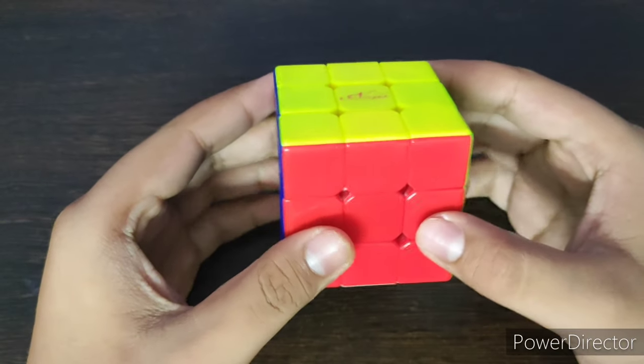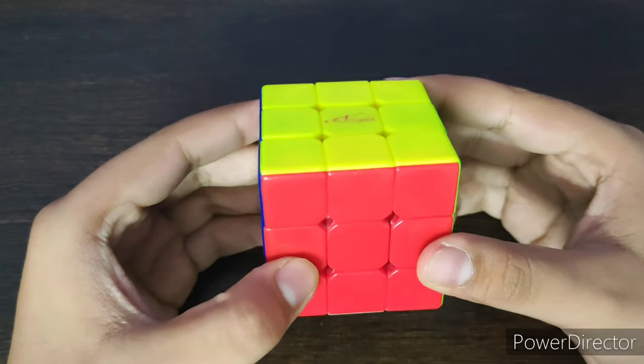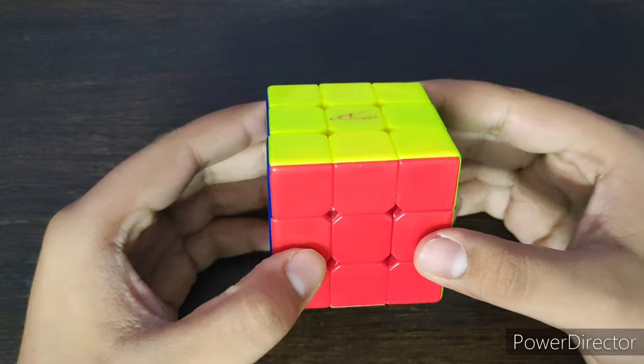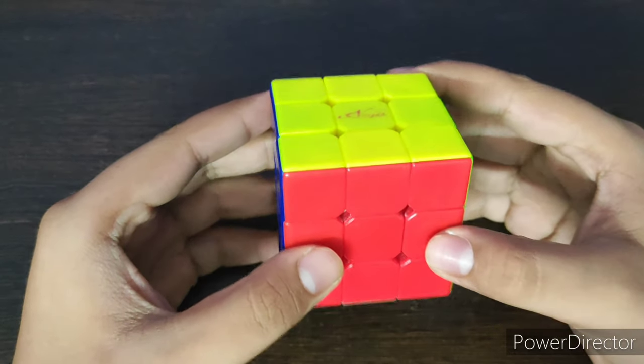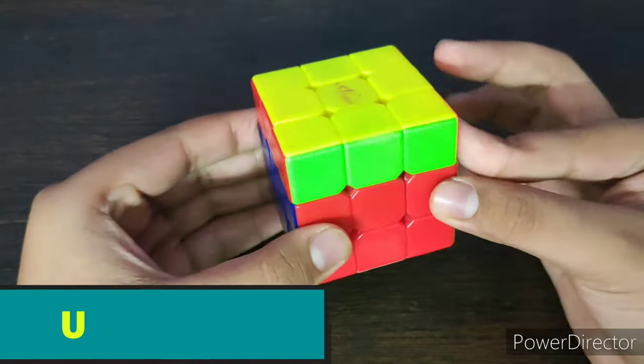So first come the U layer and the D layer. Always remember the layers U and D and every alternative layers go opposite in this direction. So like U goes this way, so D goes this way.